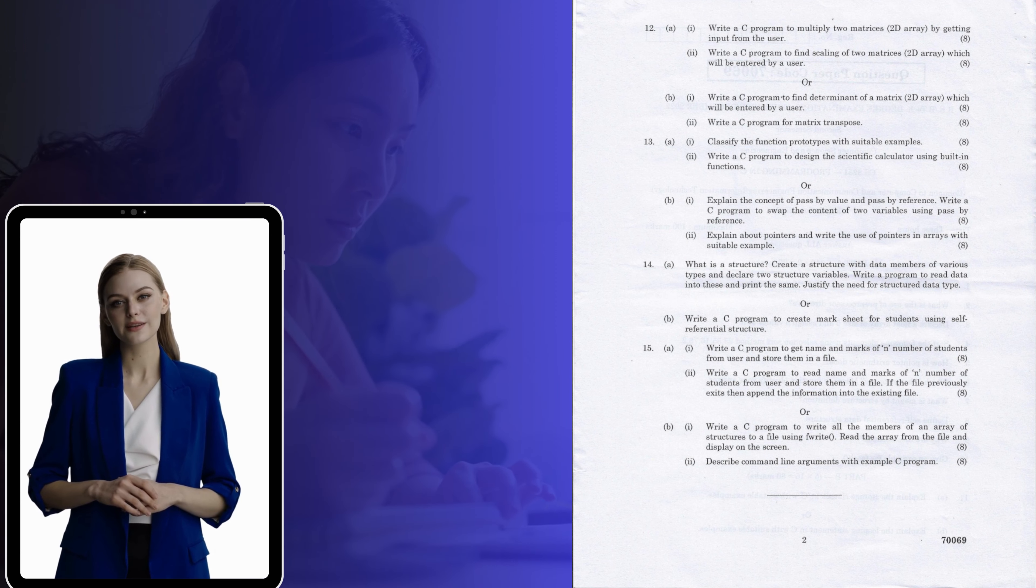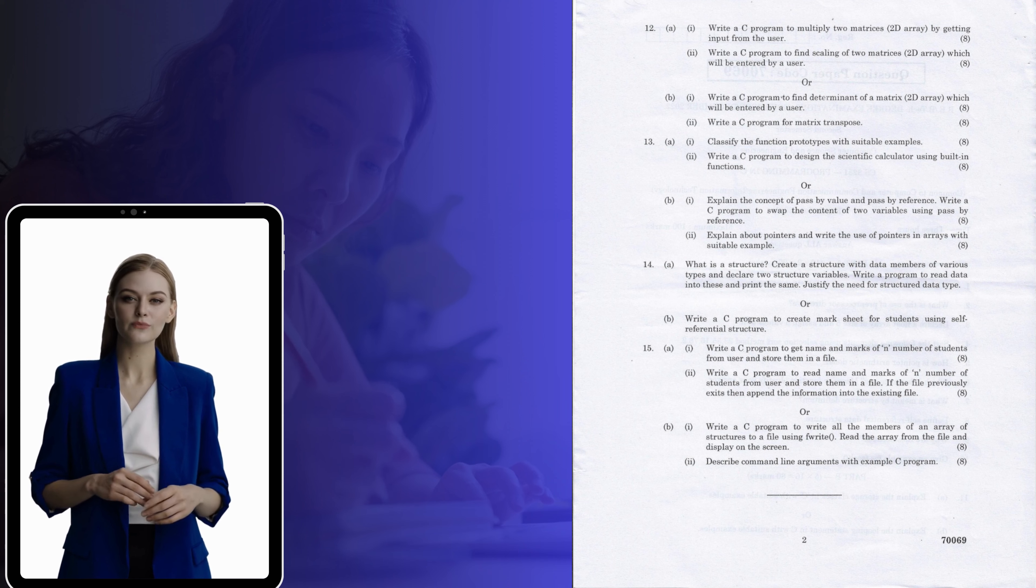Or B. i. Write a C program to write all the members of an array of structures to a file using fwrite. Read the array from the file and display on the screen. ii. Describe command line arguments with example C program.